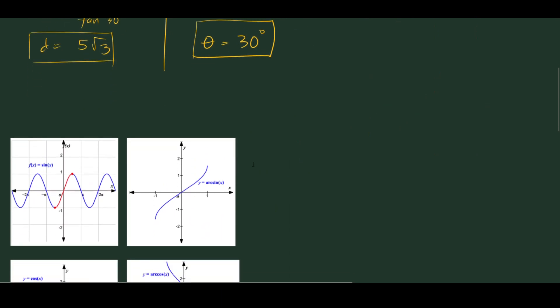However, if we restrict the domain — restrict it to negative pi over two to positive pi over two — it will now pass both the horizontal and vertical line tests, and so it now has an inverse.